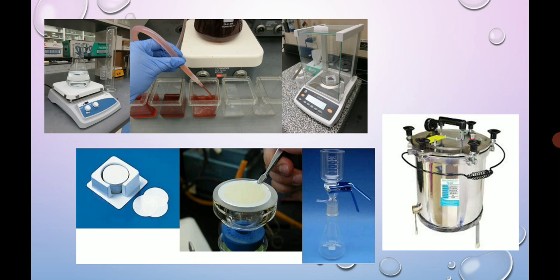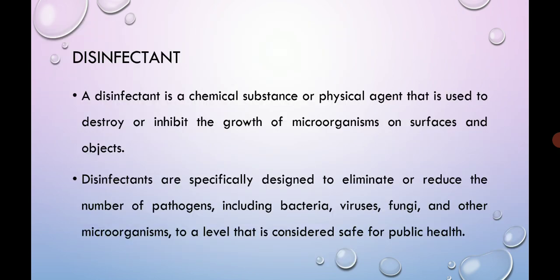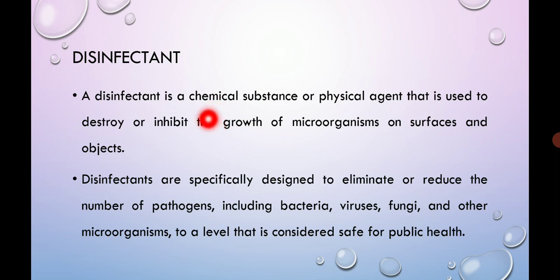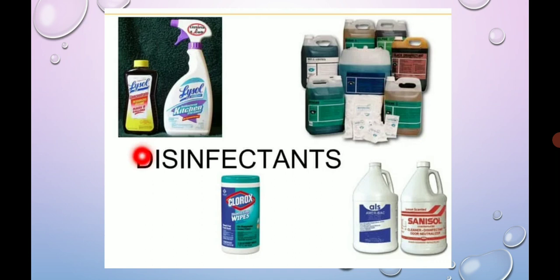Next we will discuss the term disinfectant. A disinfectant is a chemical substance or physical agent used to destroy or inhibit the growth of microorganisms. It is usually applied on the surface of an object. For example, during the COVID pandemic, people started sanitizing their hands using sanitizers that contain disinfectant chemical agents. Examples of disinfectants include floor cleaners, toilet cleaners, and sanitizers that contain disinfectant chemicals.